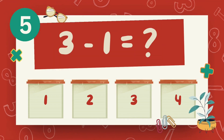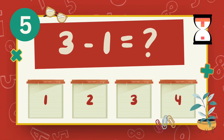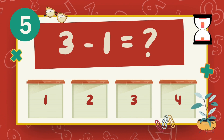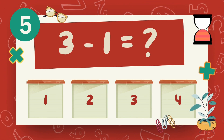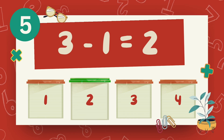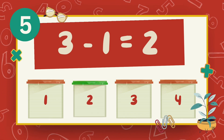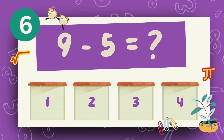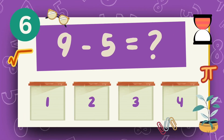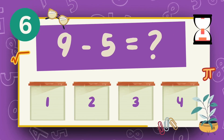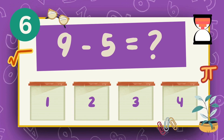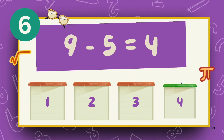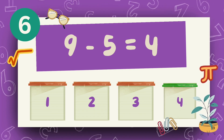What is 3 minus 1? The answer is 2. What is 9 minus 5? The answer is 4.